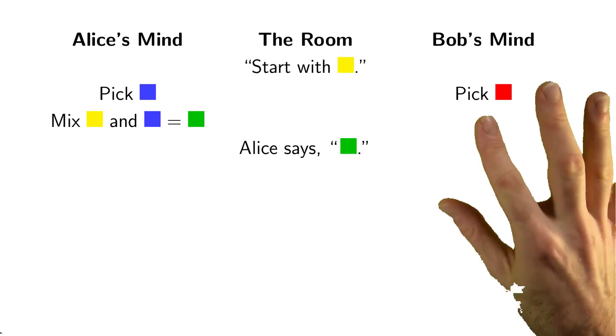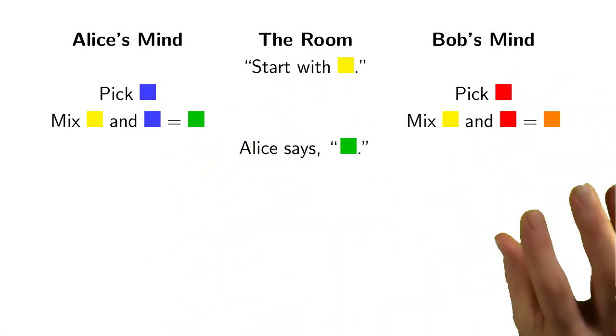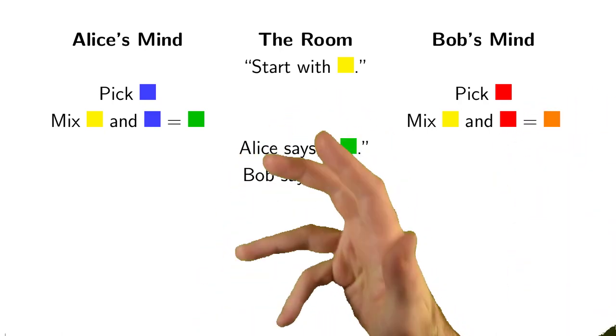Now Bob already came up with his secret color, red. He'll mix the public color, yellow, with his secret color, red, in order to get orange. And he'll reveal orange to the room.